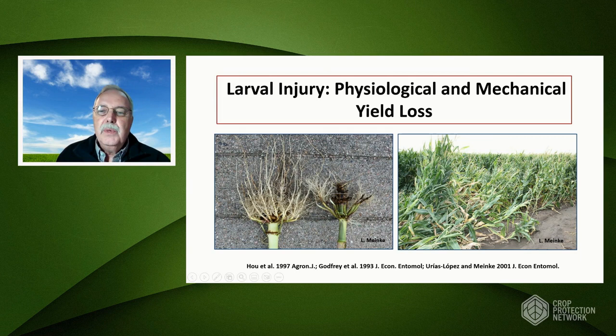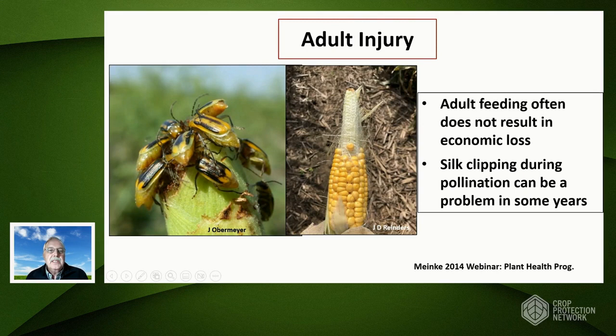Feeding usually does not lead to economic loss. However, periodically when the corn rootworm phenology gets ahead of the corn phenology, we can have severe silk clipping taking place right during the pollination period. When that happens, sometimes you'll get bad nicking and the ear won't fill out, as shown on this slide, and that can cause significant yield loss.